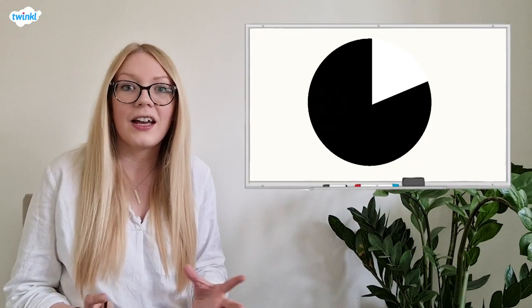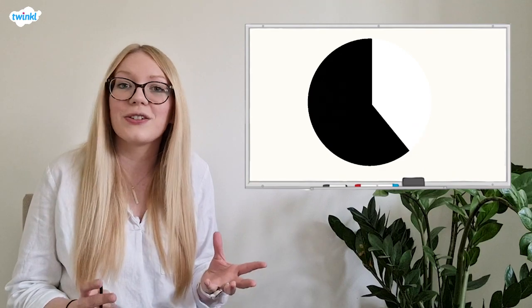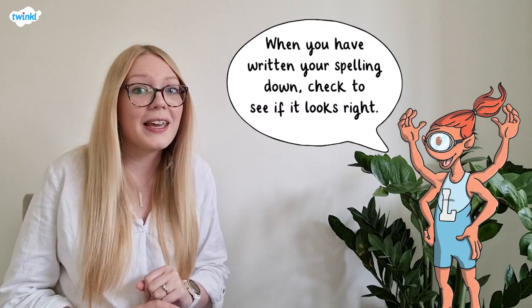For our final activity, you'll see three sentences on the screen, and each sentence has a missing word. I'll read the word, then I'll read the word within a sentence, and then I'll repeat the word. You'll then see a 10 second timer on the screen, and you have until the end of that 10 seconds to write down your answer.